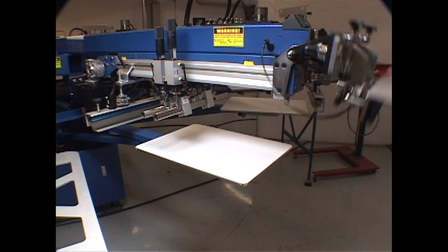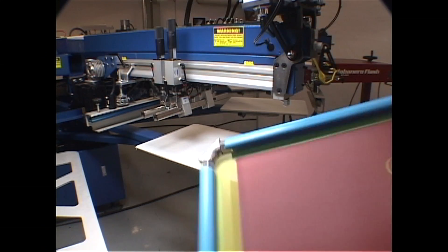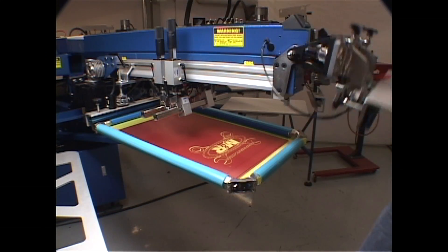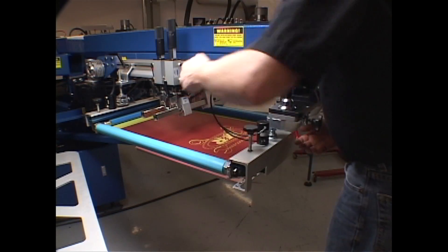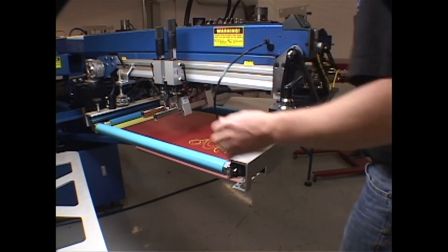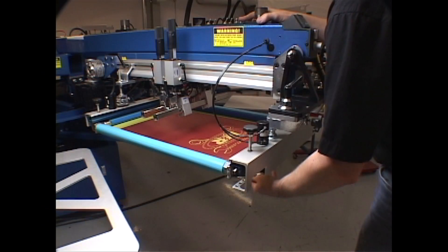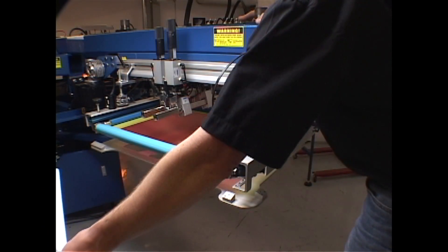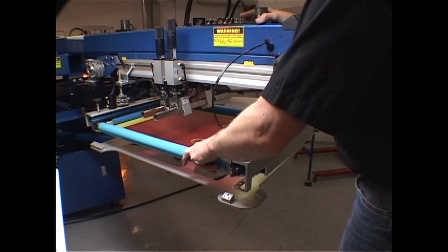Load an appropriately sized screen into the frame holders. Manually index the Tri-Lock pallet under the printhead. Then push the screen to the rear and to the right.